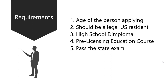The sixth requirement is to choose a broker. After you pass the exam and get the license, to activate your license you must work under a broker, and then you can start selling real estate. Once you choose a broker, it is their responsibility to make sure you're not breaking the law, and they help you fix errors and protect you and the company from any kind of losses.